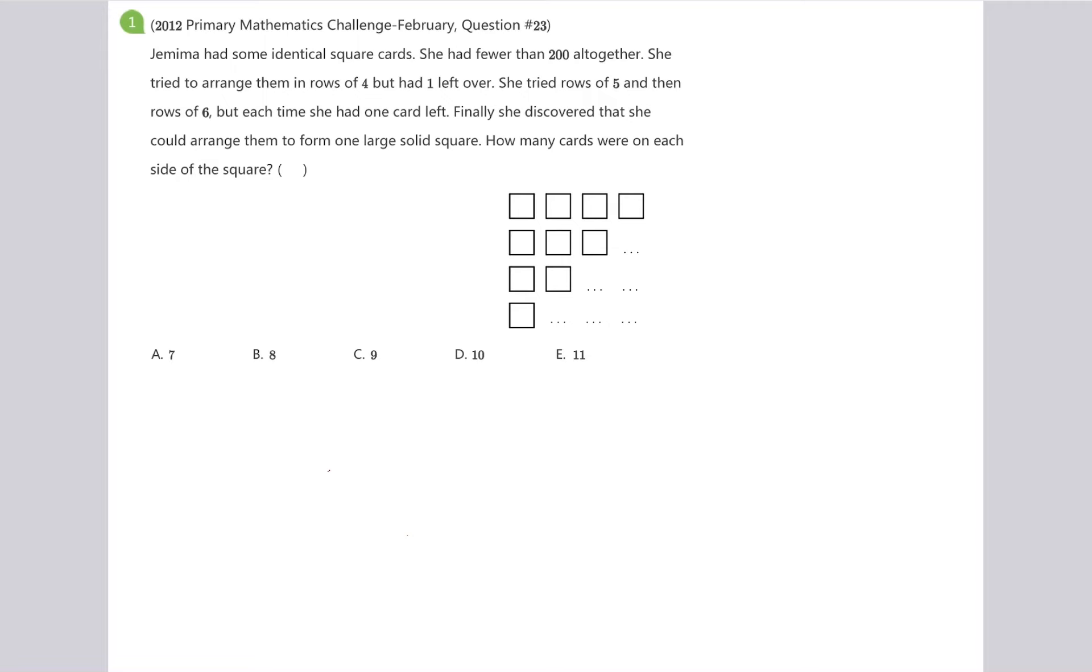Jamima had some identical square cards. She had fewer than 200 altogether. She tried to arrange them in rows of 4 but had one left over. She tried rows of 5 and then rows of 6, but each time she had one card left.